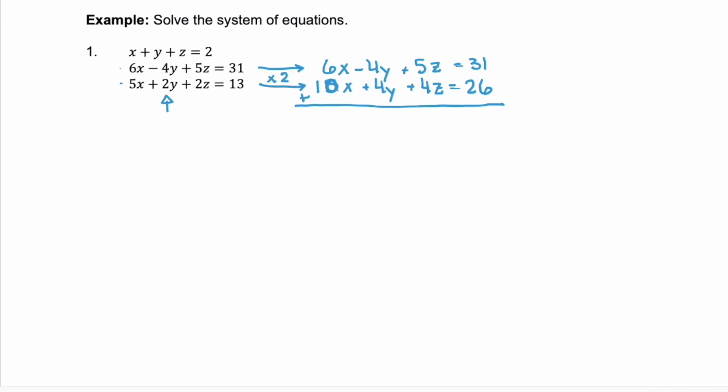Adding these equations, we're going to get 16x, our y's eliminate, we have +9z = 57. We're going to name this equation equation four, since we've created this equation by adding two other equations together. Now we want to try to come up with another equation that we can use with equation four to hopefully find a variable.